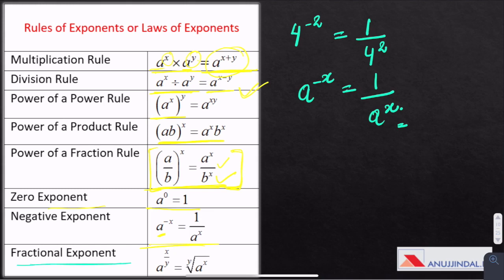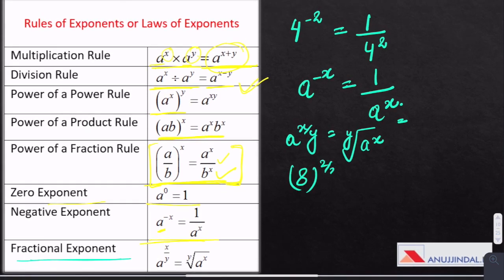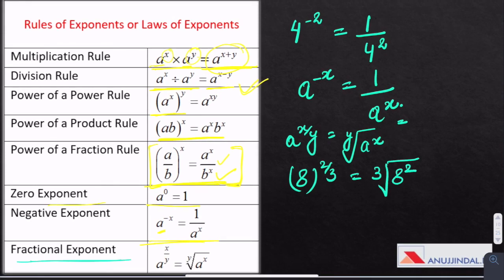Fractional exponents: 8 to the power 2 by 3 means 8 square and then cube root of 8 square. 4 is the answer. You should memorize all this so as to solve the questions easily and save your time.